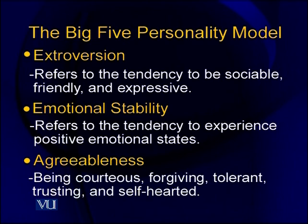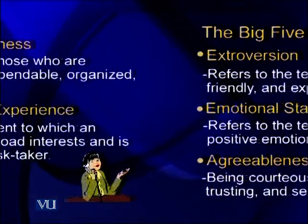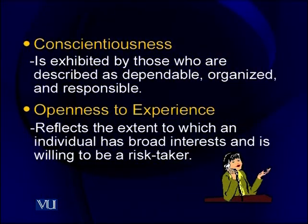Emotional stability refers to the tendency to experience positive emotional states. Agreeableness includes being forgiving, tolerant, and trusting. Conscientiousness is exhibited by those described as dependable, organized, and responsible. The fifth is openness to experience. These five together form the Big Five personality model.